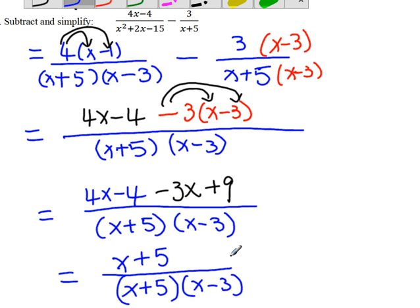Now we try to cancel the common factors. So x plus 5, x plus 5, we can cancel it out. We end up with, now you don't see any term on the numerator, but don't forget we have invisible 1. 1 over x minus 3.